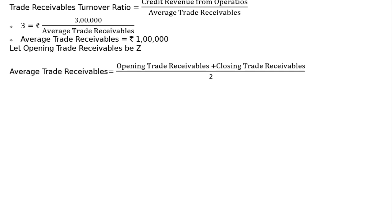Average trade receivable equals opening trade receivable plus closing trade receivables divided by 2. So ₹1 lakh equals Z plus 4Z divided by 2. The closing is 4Z because it is stated as three times MORE — meaning three times more plus one time equals four times. Remember: if the word 'more' is overlooked, you lose everything.